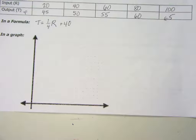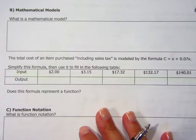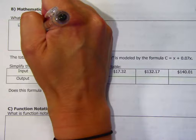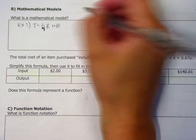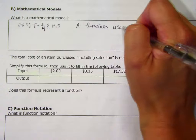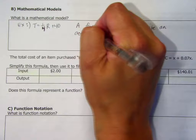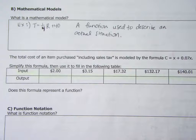What we call a mathematical model is, for example, that T equals one-fourth R plus 40. A mathematical model is really just a function used to describe an actual situation.